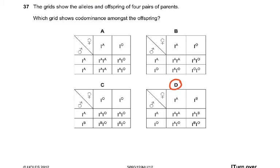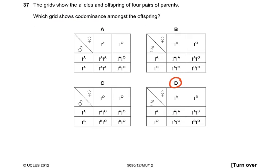The grid shows the alleles and offsprings of four pairs of parents. Which grid shows co-dominance among the offsprings? Here it was A and A, then A and O. And wherever there is A, B, that is the one you've got to figure out. This was the one where there was an A, B. And that is called co-dominance. When A and B both show their effect, that would be co-dominance.